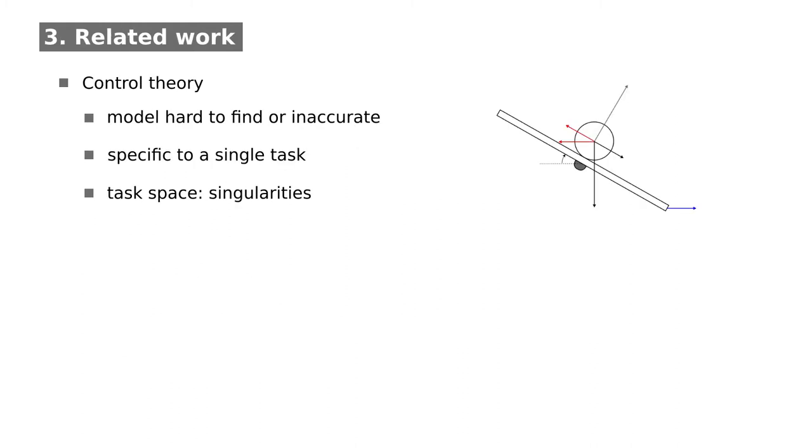Referring to related work, control theory provides widely used methods to implement feedback loops. In contrast to our approach, designing a controller requires a model of the process and the actuators. For tasks like welding or grinding, such a model is hard to find. But even if the physics can be described accurately, the resulting control architecture is specific to a single task, making it inflexible.